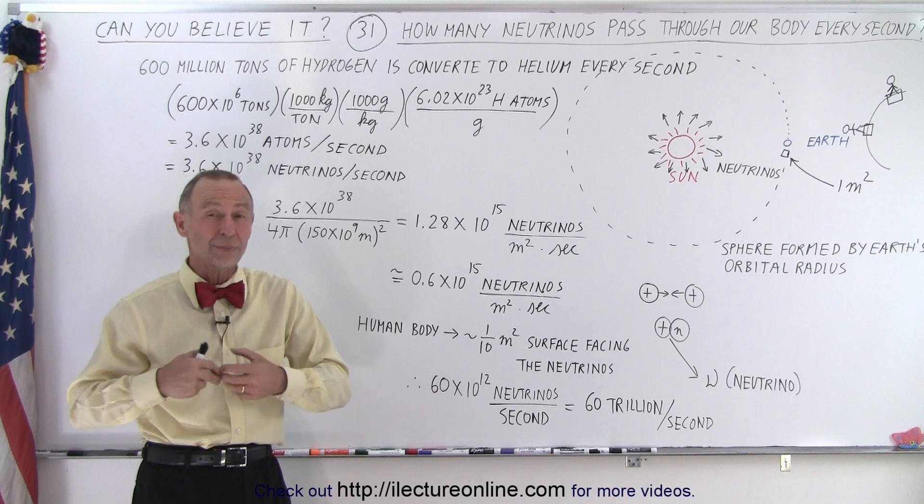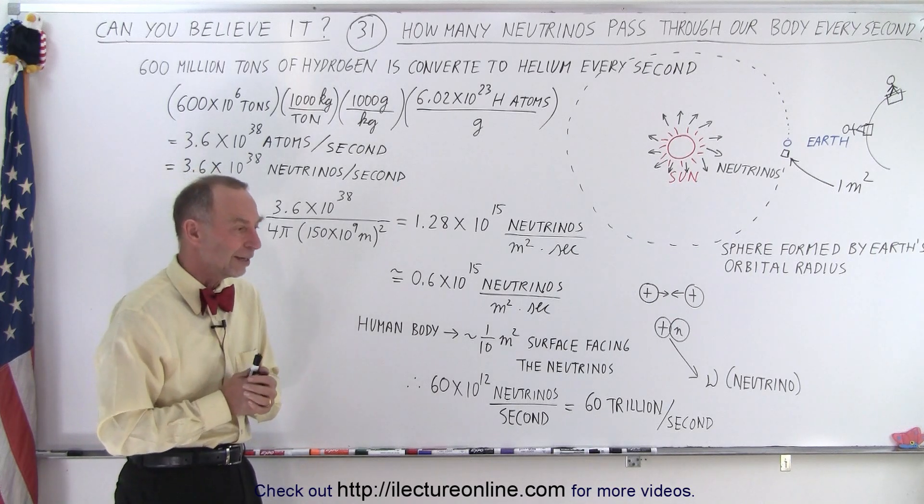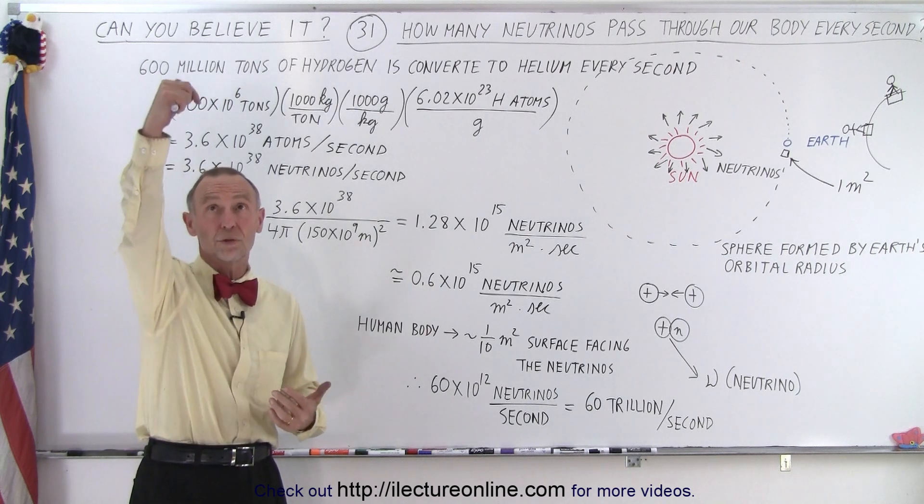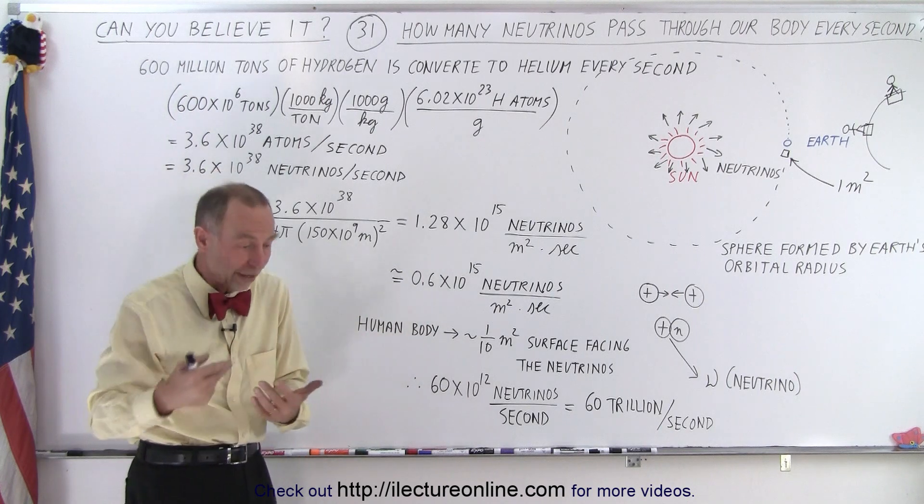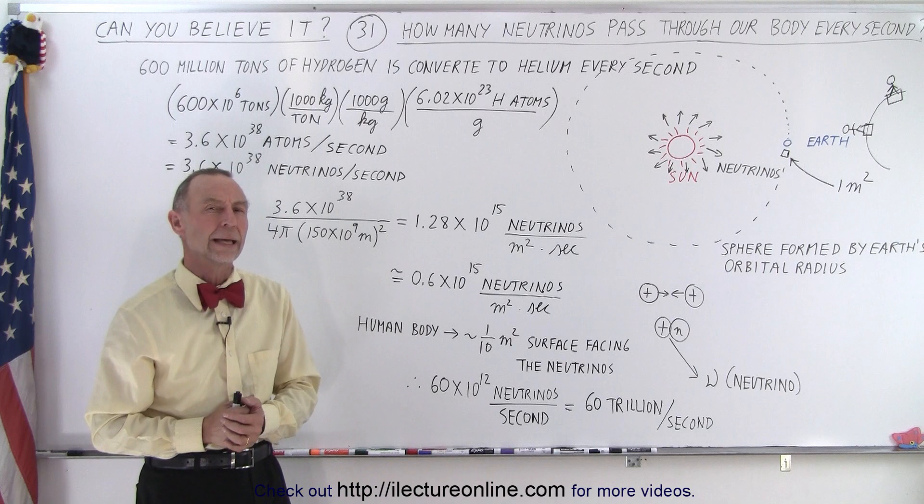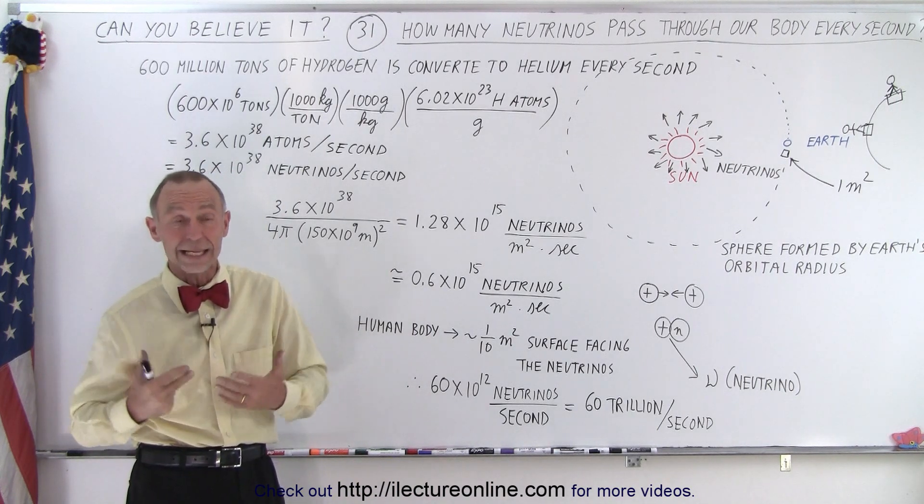And they move at very high speeds near the speed of light. And what's in particular about neutrinos is that they generally do not interact with normal matter. So if a neutrino comes towards us, they'll go right through us as if we're not here. Matter of fact, they go right through the Earth and come out the other side and continue. And it turns out there's a lot of those neutrinos that hit us every single second. The question is, how many?